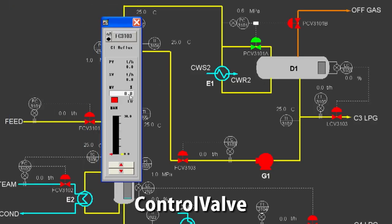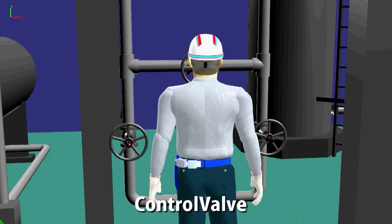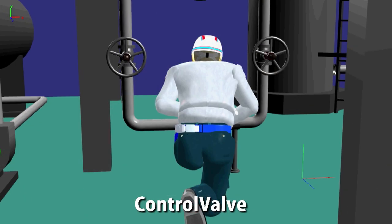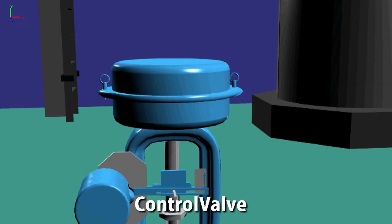We are calling for the reflux flow controller FC3103 and change to the manual mode, and we are making changes with the output operations. In cooperation with avatars, we are confirming if the control valve is operational in normal mode.